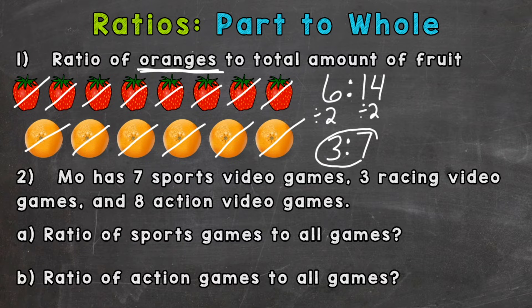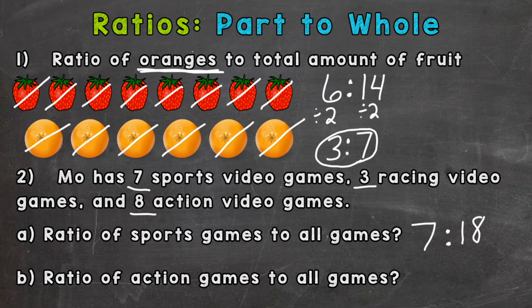Alright, let's take a look at number 2. Mo has 7 sports video games, 3 racing video games, and 8 action video games. So part a, we're doing the ratio of sports games to all the games. So sports games is 7 and we need to compare that to the total amount of games. So 7 sports games plus 3 racing games plus 8 action games gives us a total of 18 games. So our part is the sports games and our whole...